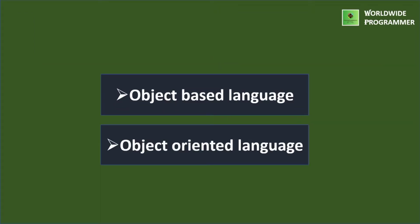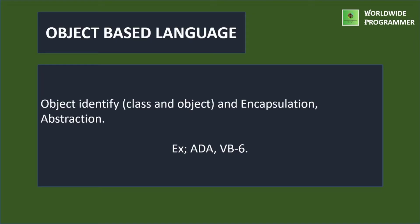Depending upon object support, we have two types of languages. First one is object-based language and another is object-oriented language. Object-based language: object identifiers like class and object use encapsulation and abstraction. For example, ADA. The term object-based language may be used in a technical sense to describe any programming language that uses the idea of encapsulating state and operations inside objects. Object-based languages do not need to support inheritance or subtyping, but those that do are also termed object-oriented.